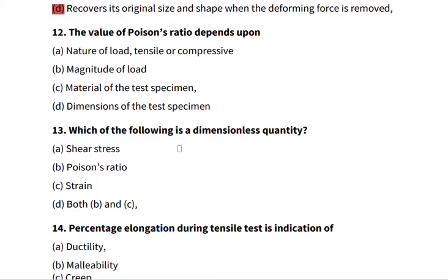Twelve: the value of Poisson's ratio depends upon nature of load, being tensile or compressive, magnitude of load, material of the test specimen, dimensions of the test specimen. Poisson's ratio depends upon the material. Every material has its own Poisson's ratio. It's constant for materials such as steel, wood, aluminum, they have their constant Poisson's ratio.